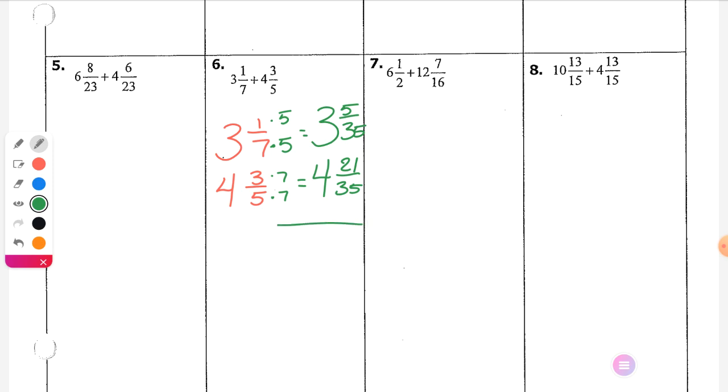Okay, 5 plus 21 is 26. My denominator stays the same. Now I need to check and see if I can do what? Reduce. Does 2 go into both of them? Why not? 35 is odd. Does 3 go into them?